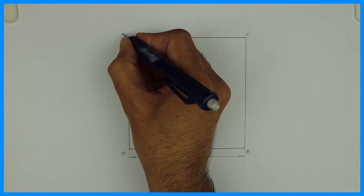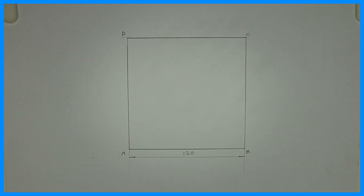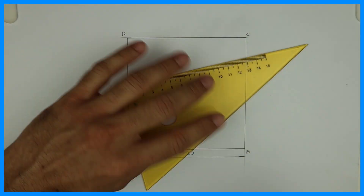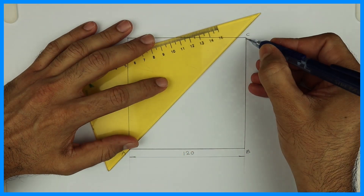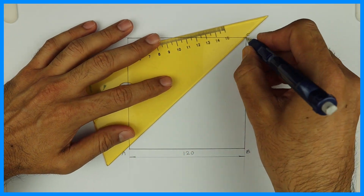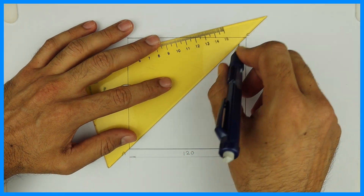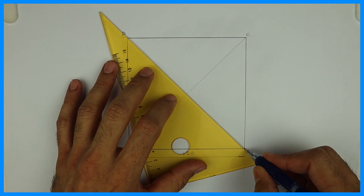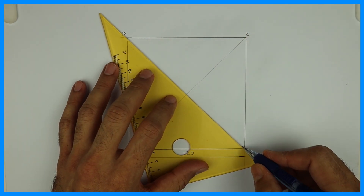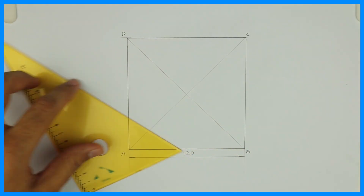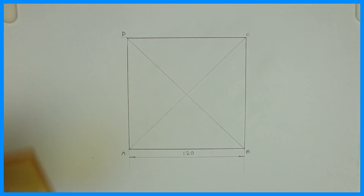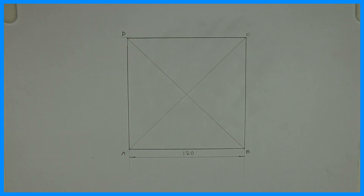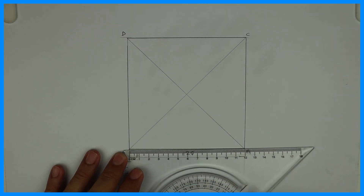Now we need to divide this into four parts because we need to draw four equal circles touching one side and two other circles. So you join the diagonals. Once you join the diagonals, you get four parts: OAB, OBC, OCD, and ODA, where O is the midpoint.